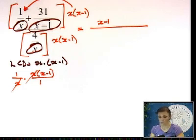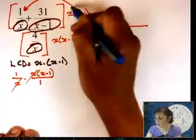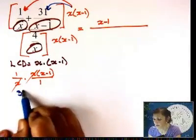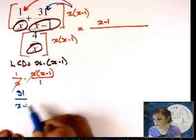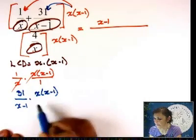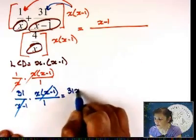Then I'm going to do these two. So I have 31 over x minus 1. And I'm going to multiply it with x times x minus 1. These two will go. You're going to end up with 31x.